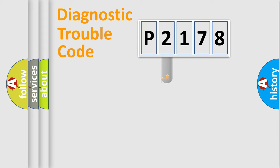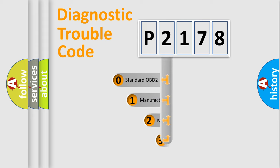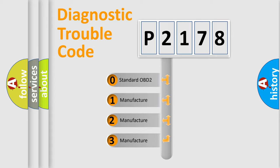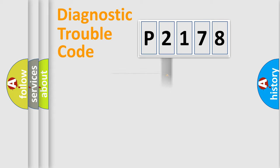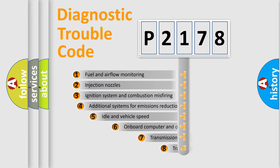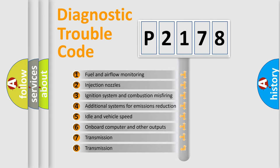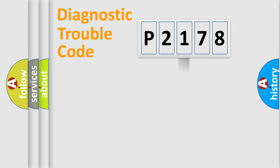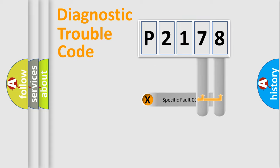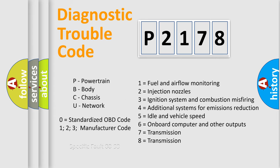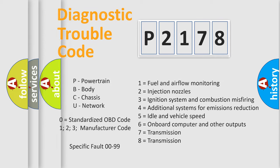This distribution is defined in the first character of the code. If the second character is expressed as zero, it is a standardized error. In the case of numbers 1, 2, or 3, it is a more specific car-specific error. The third character specifies a subset of errors, and only the last two characters define the specific fault of the group. This division is valid only when the second character is zero.